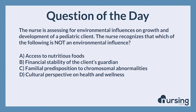The correct answer is C: familial predisposition to chromosomal abnormalities. Familial predisposition describes a genetic influence on the growth and development of a client. The other three options are environmental influences.